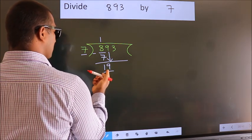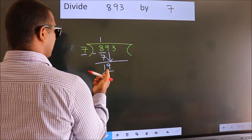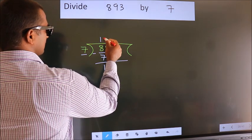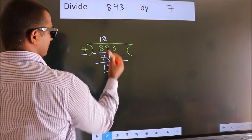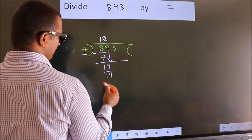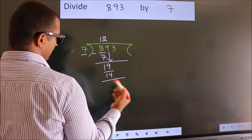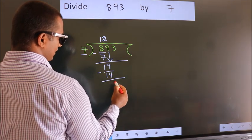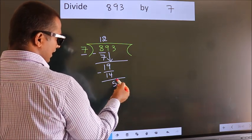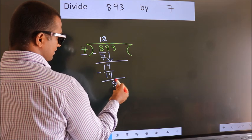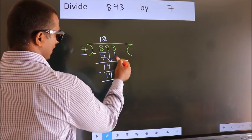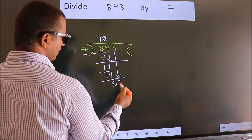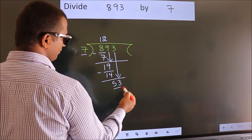A number close to 19 in the 7 times table is 7 twos 14. Now we subtract. We get 5. After this, bring down the beside number. So 3 down. So 53.